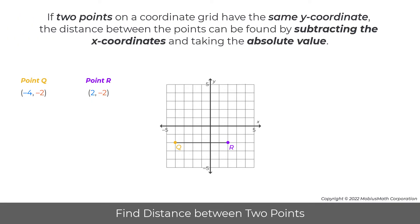If two points on a coordinate grid have the same y-coordinate, the distance between the points can be found by subtracting the x-coordinates and taking the absolute value.